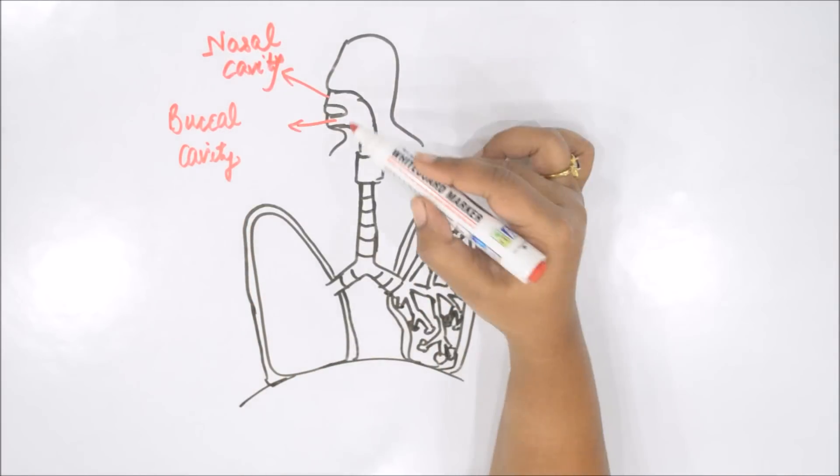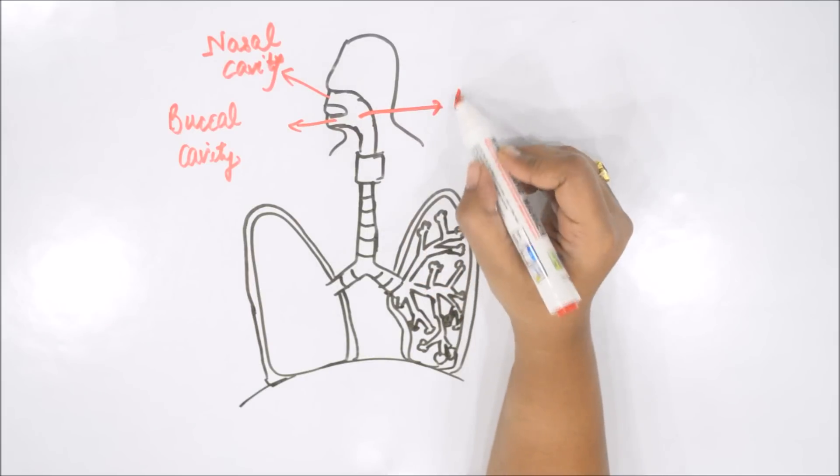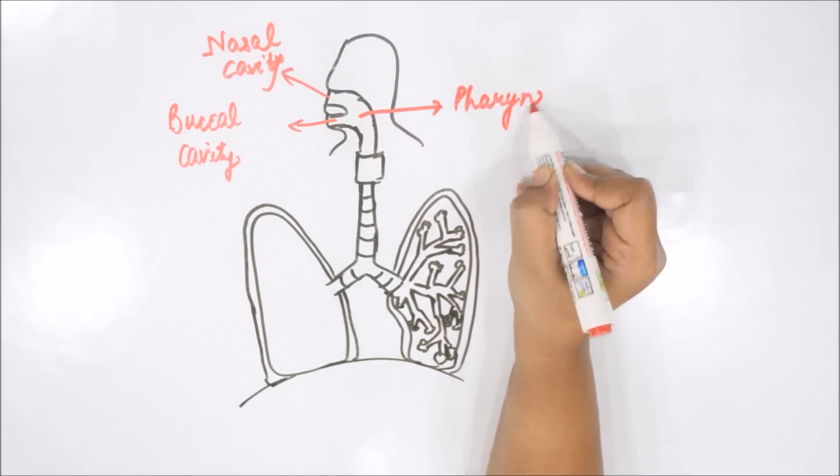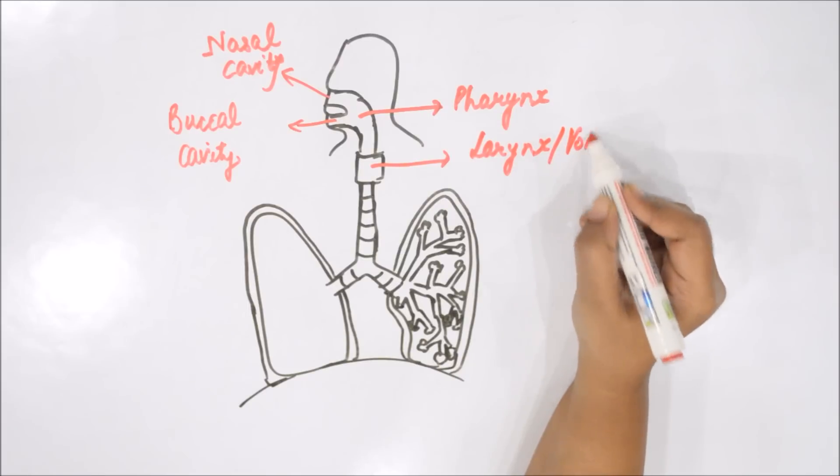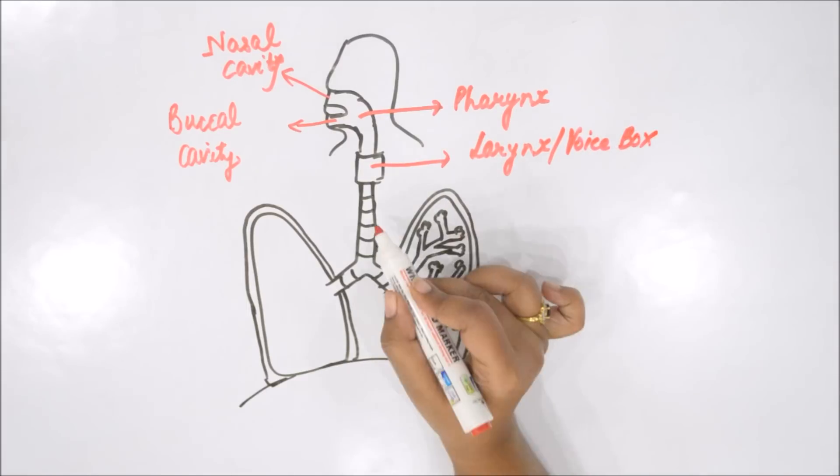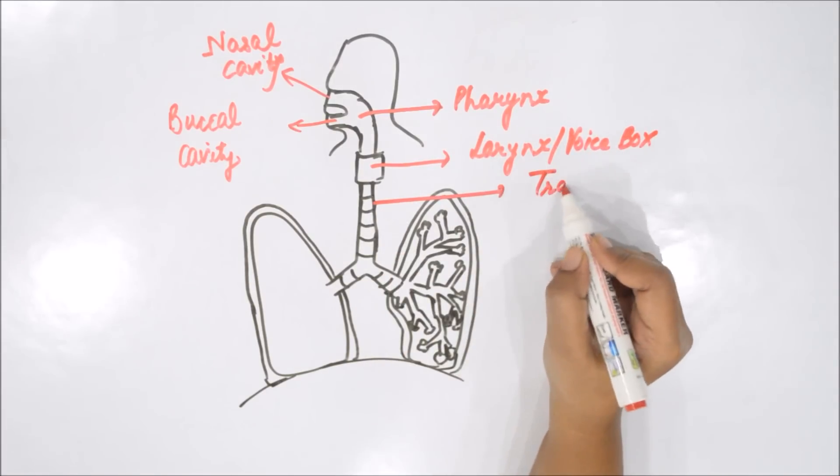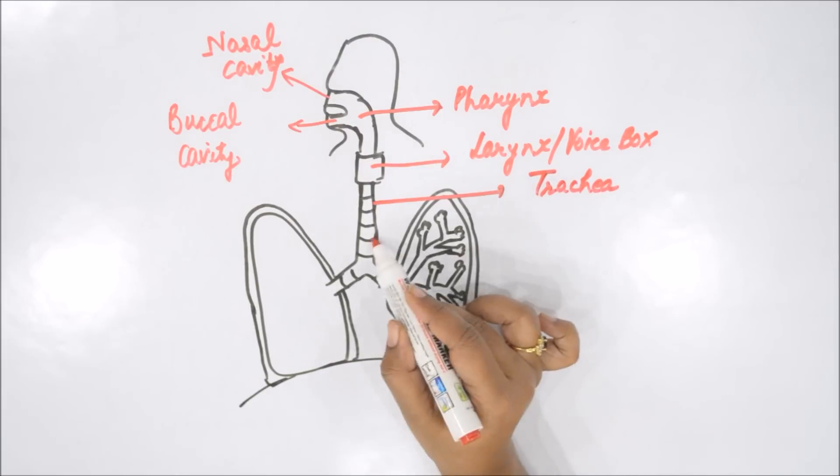Both these cavities cross at pharynx, the place where food and air cross each other. Pharynx is followed by larynx. Larynx is called as your voice box or Adam's apple. This is your trachea.